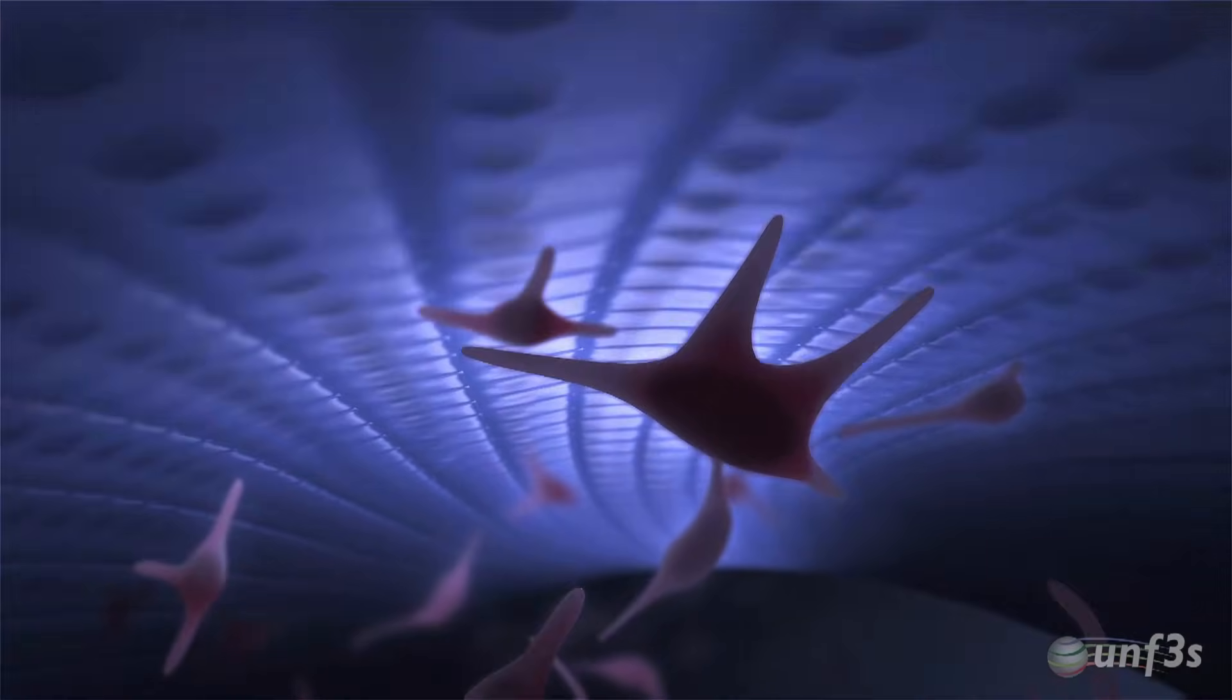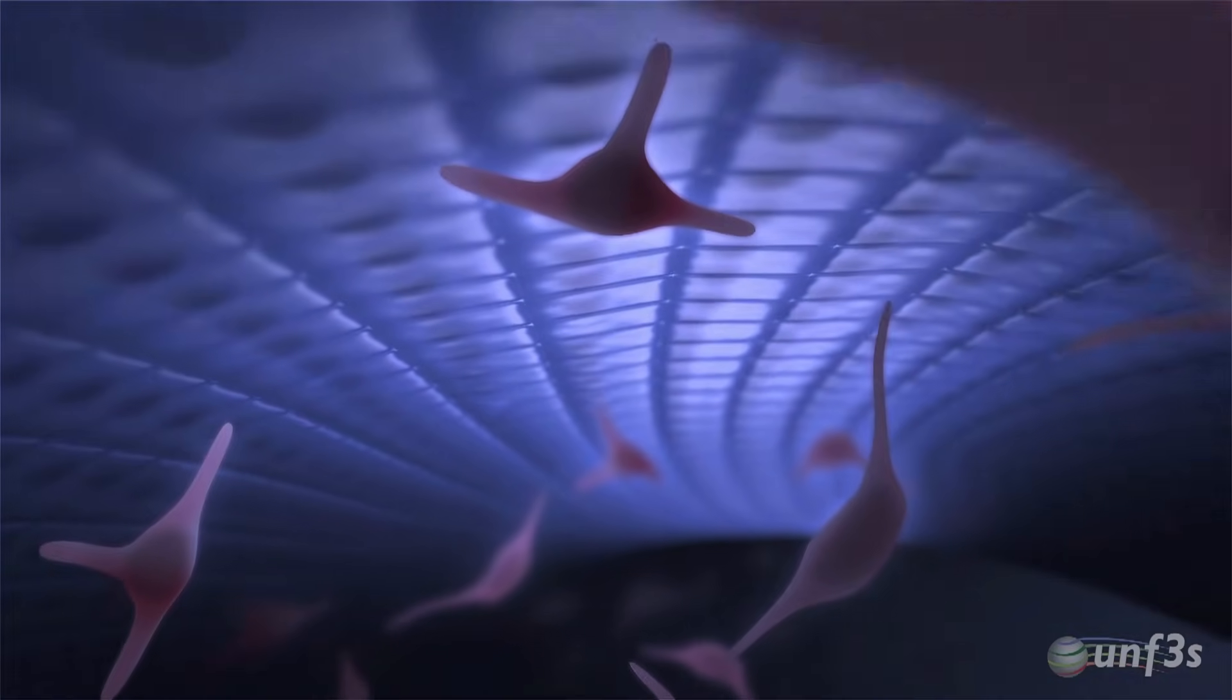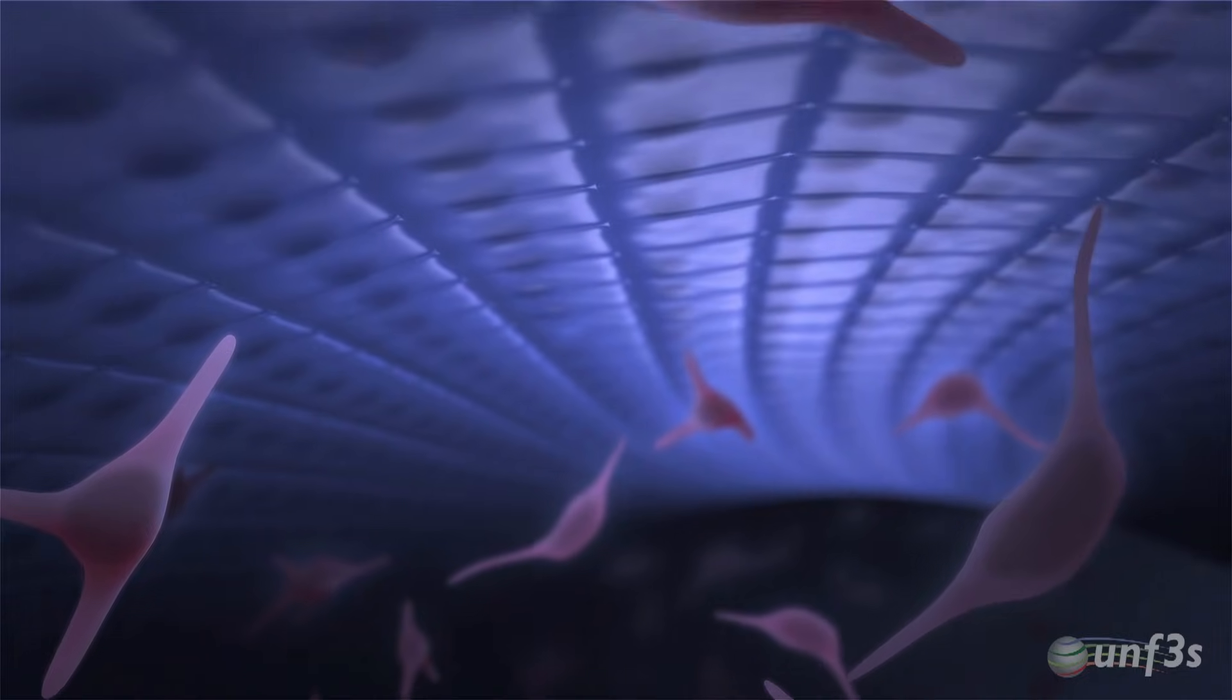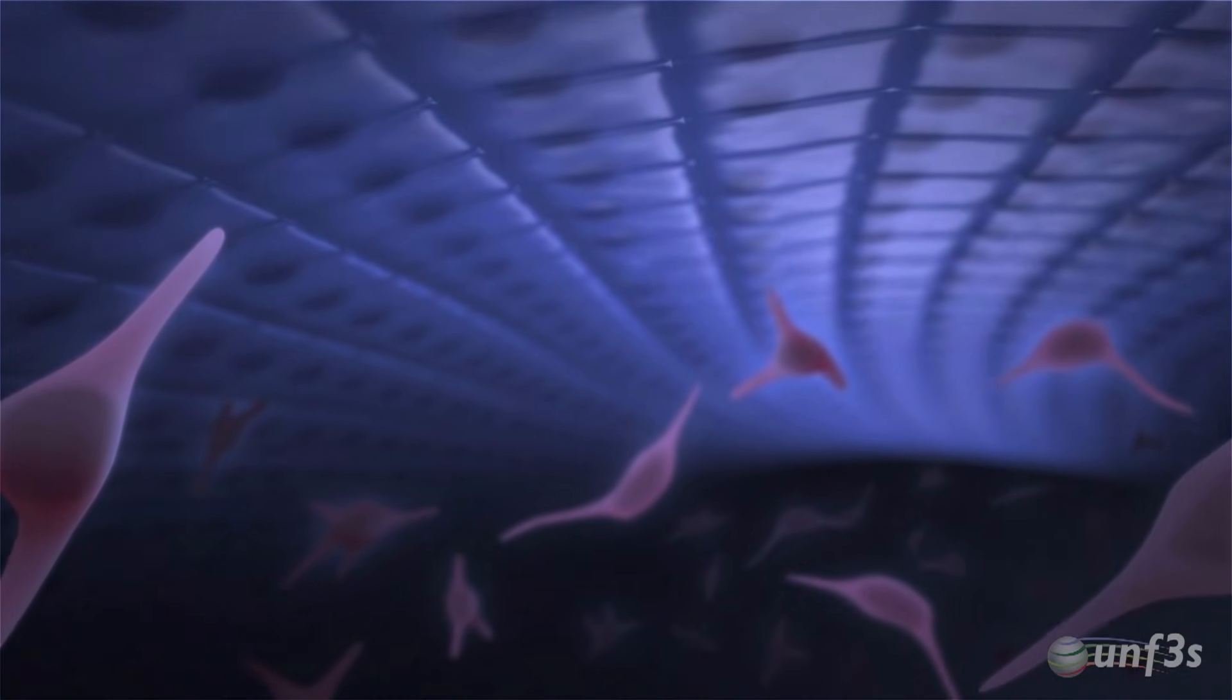It all starts at the primitive mouth of a five week old embryo. At the location of the future dental arches, the epithelium of the primitive mouth is called odontogenic epithelium.